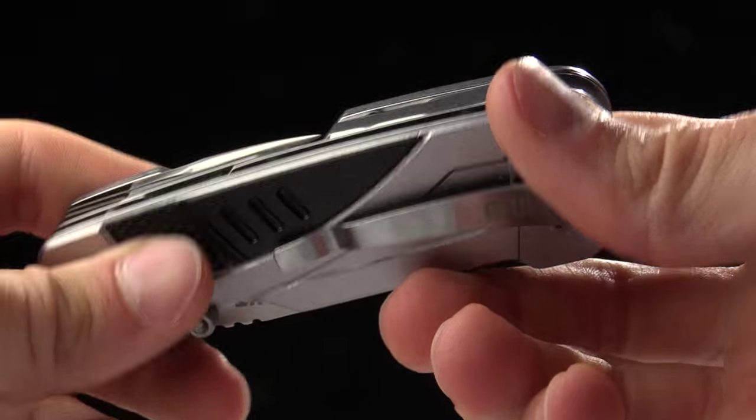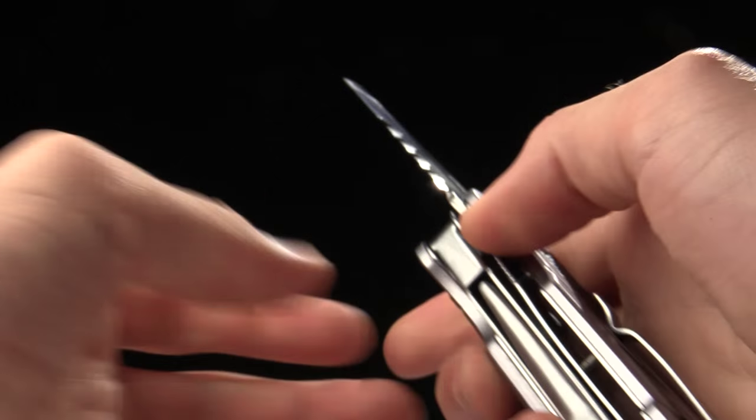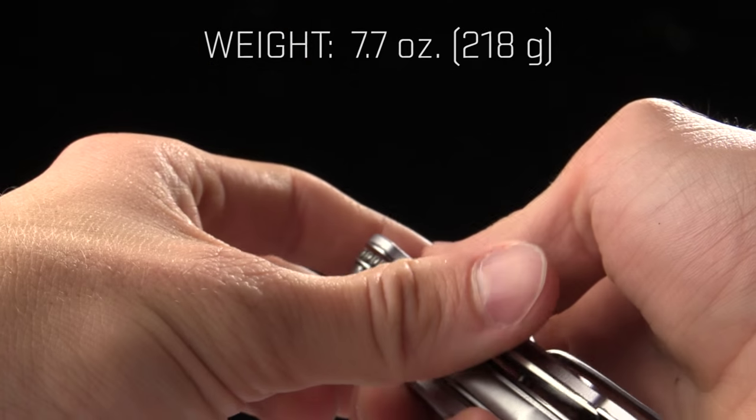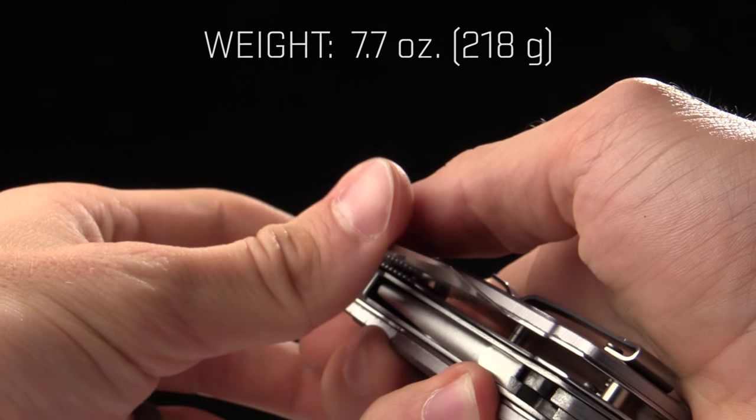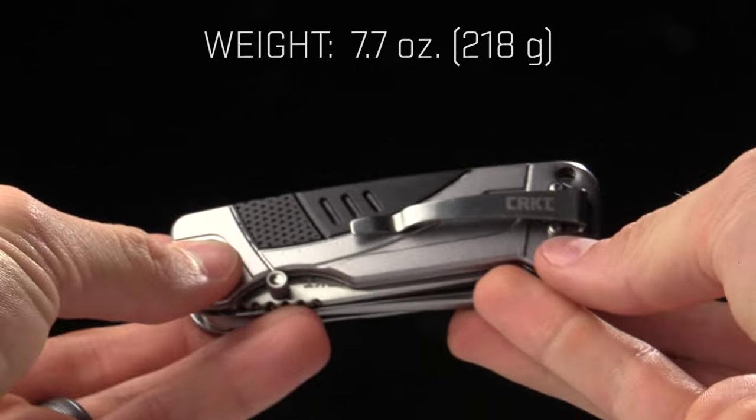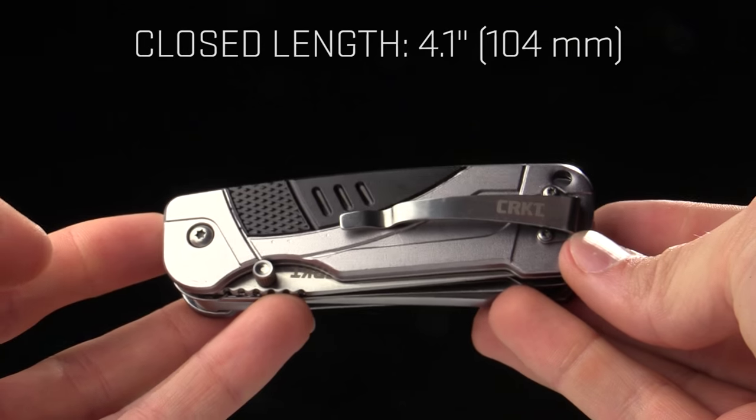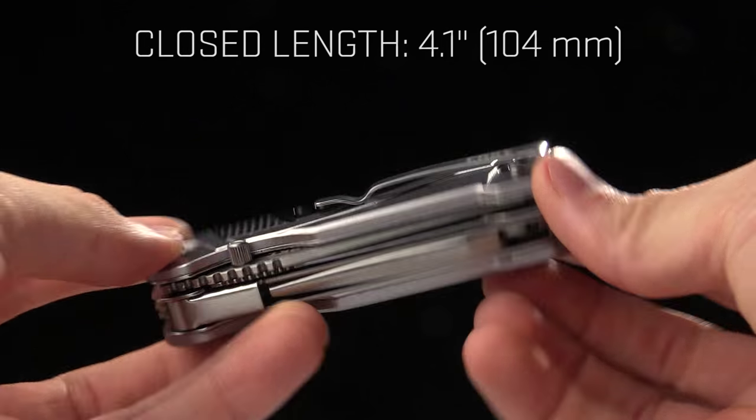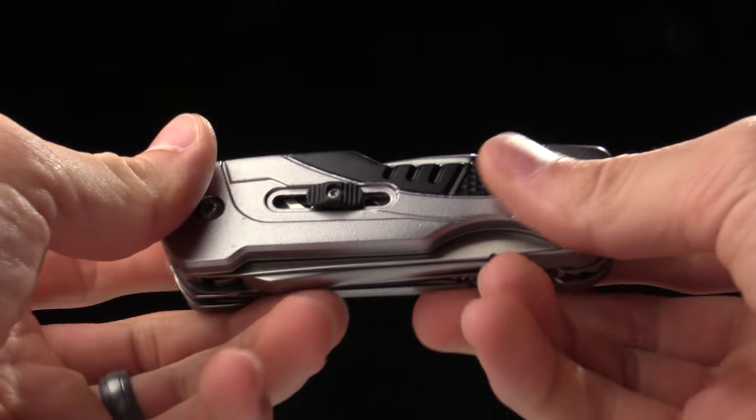So there you have it. It's called the Bivy multi-tool. The weight on it is right at 7.7 ounces. The length when it's closed is 4.1 inches. So very solid tool.